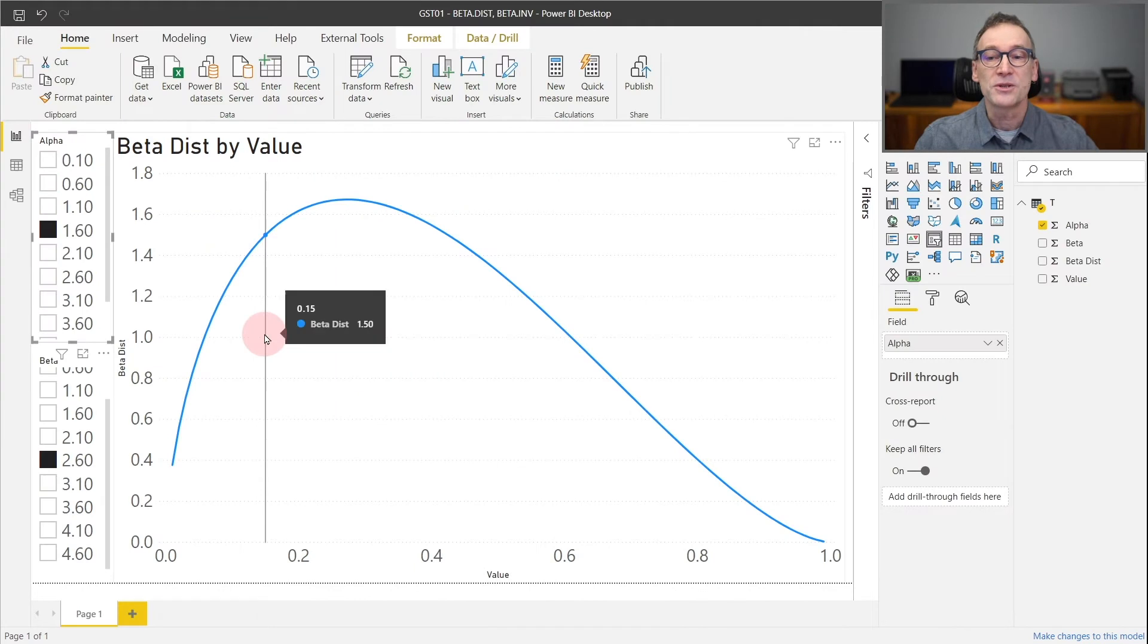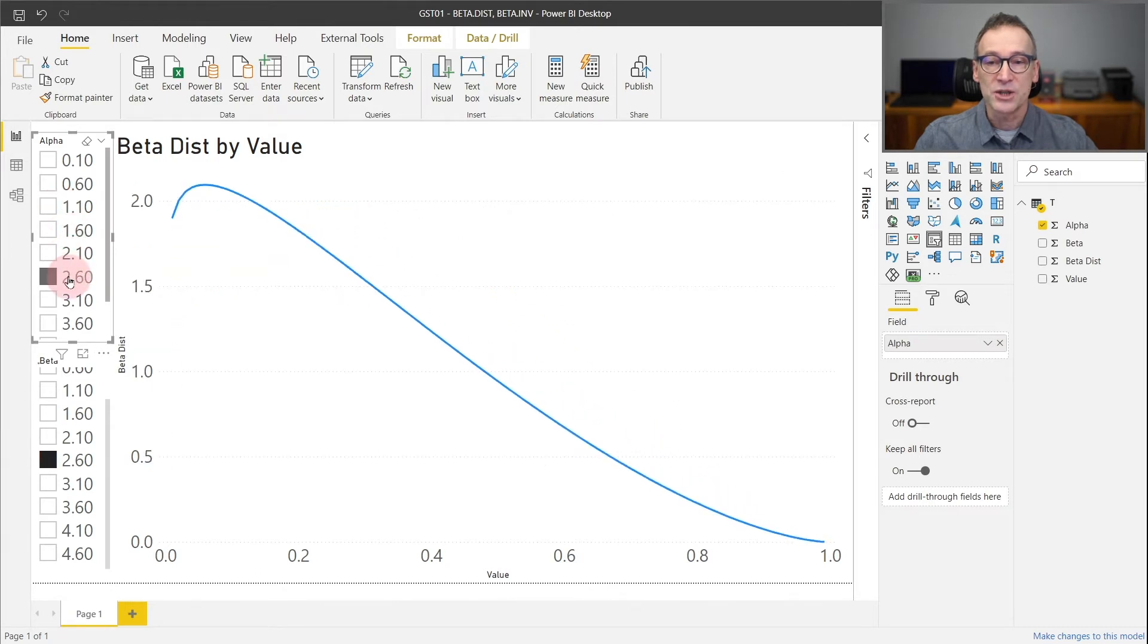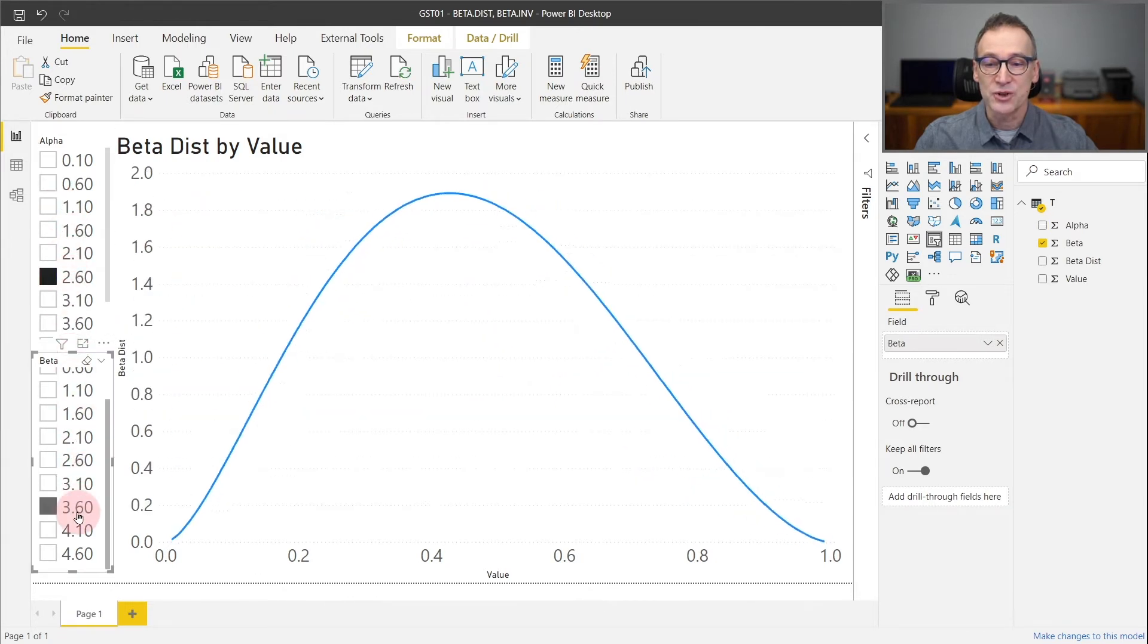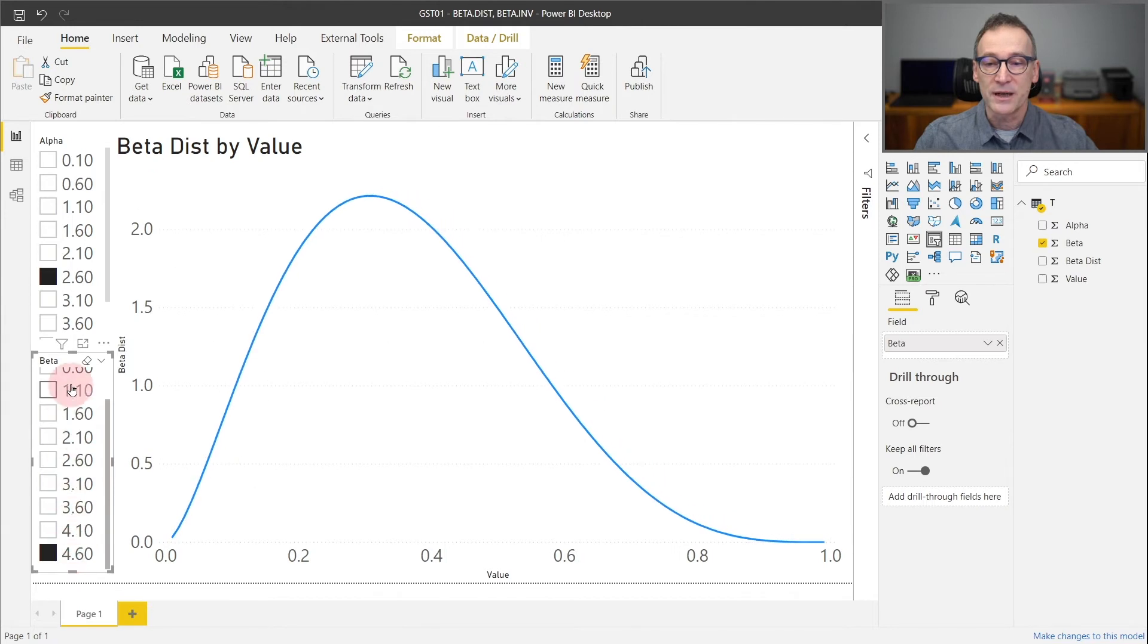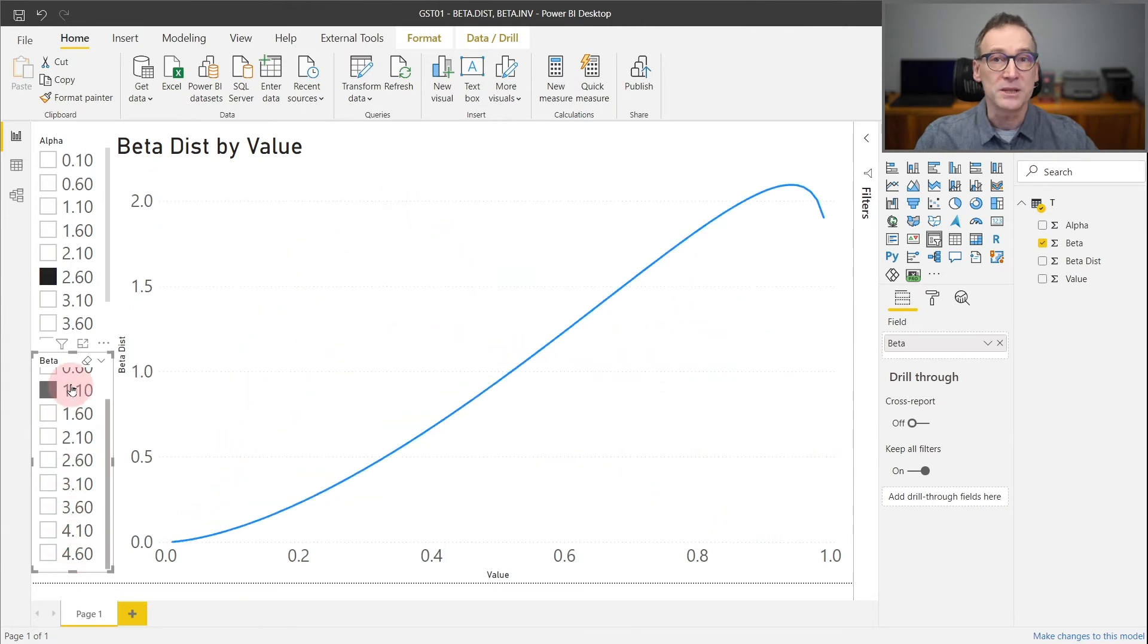You can see in this chart that I have different values for alpha and for beta, and that depending on the values that I choose, the shape of the statistical function changes and obtain the different values as you would expect from a beta distribution.